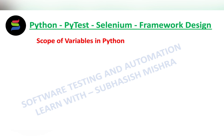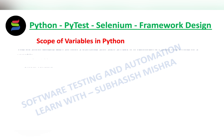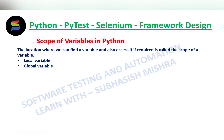Here `a` is a variable of integer type and `name` is a variable of string type. In this lecture, we will learn about the scope of these variables. So, what is the scope of a variable? The location where we can find a variable and also access it if required is called the scope of a variable.